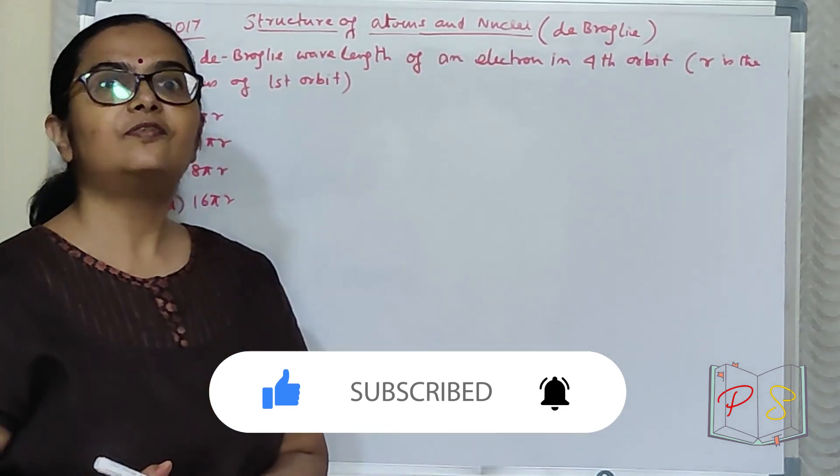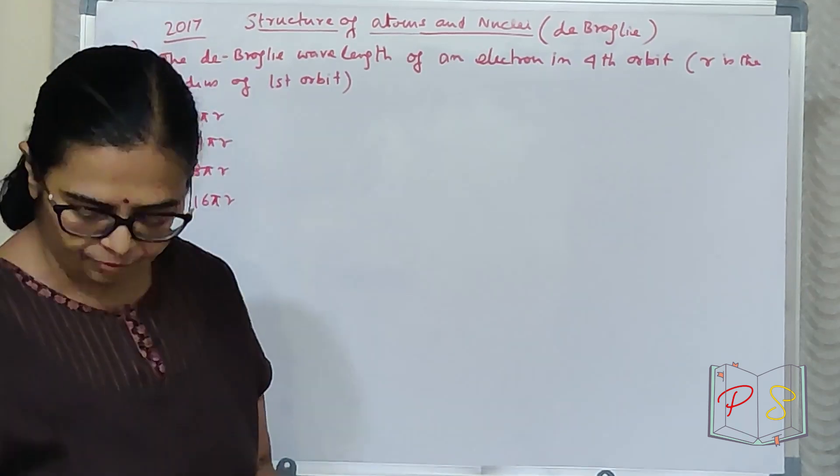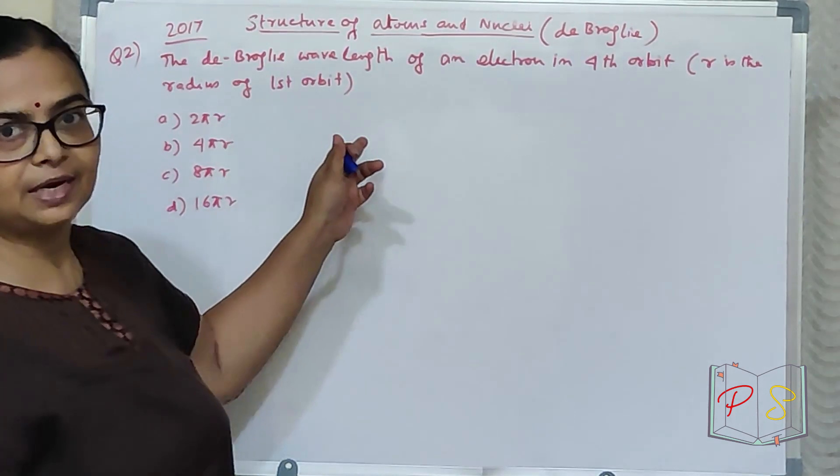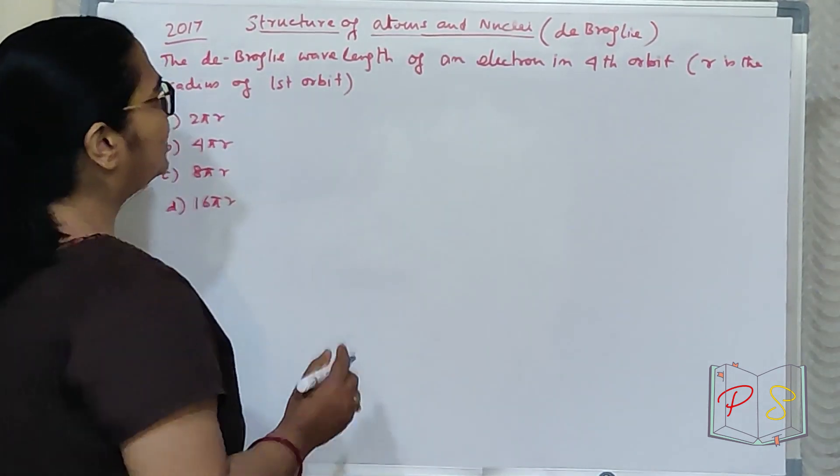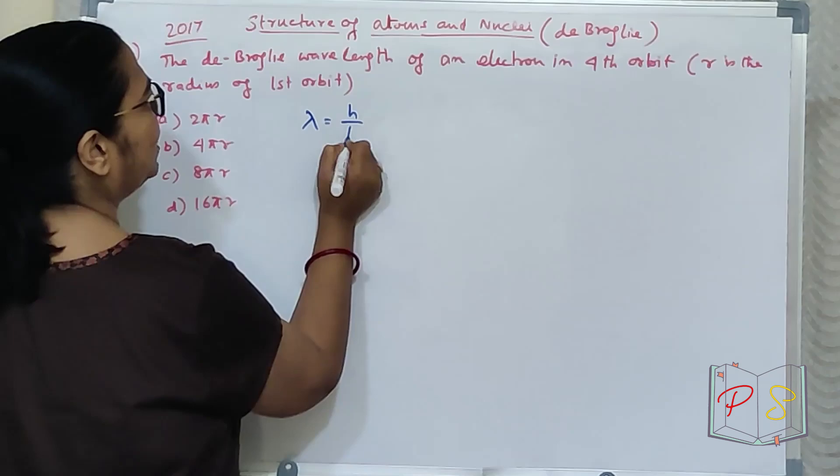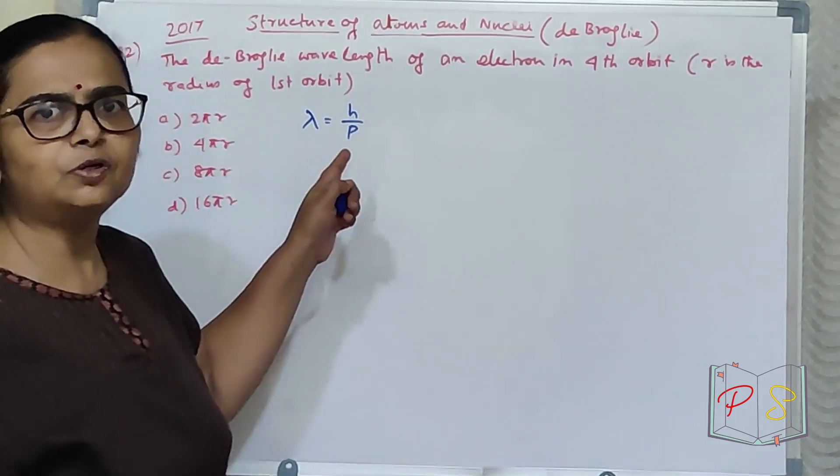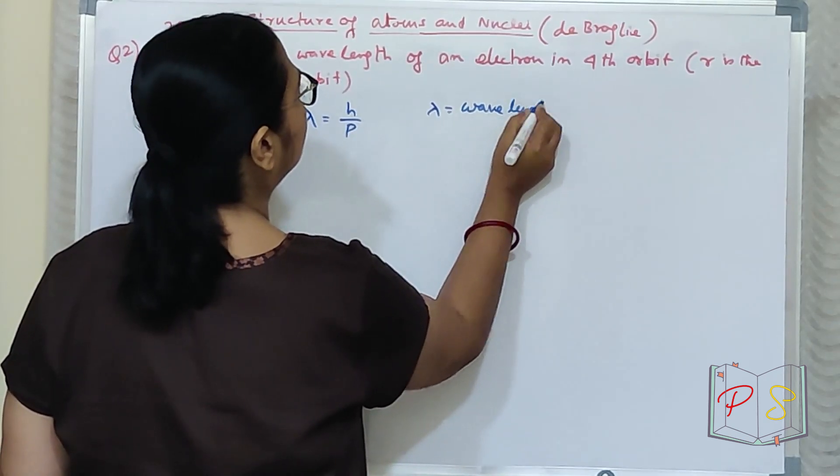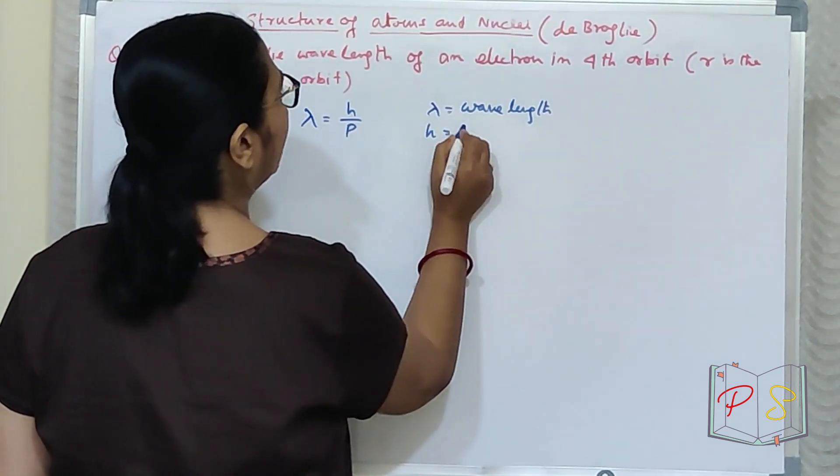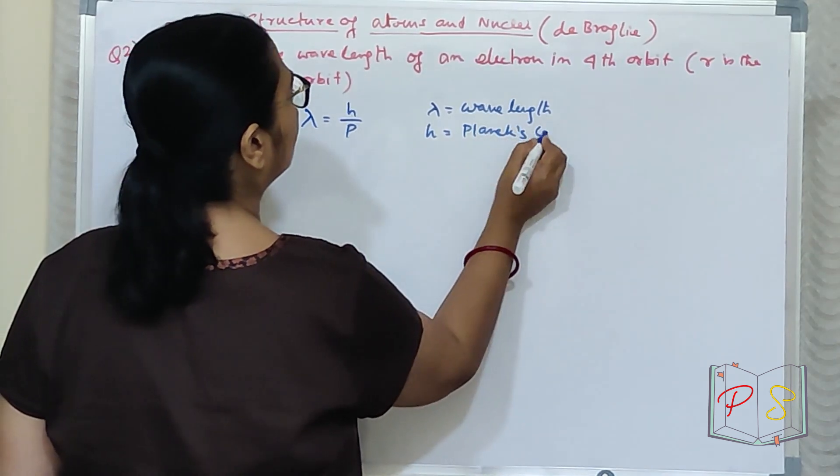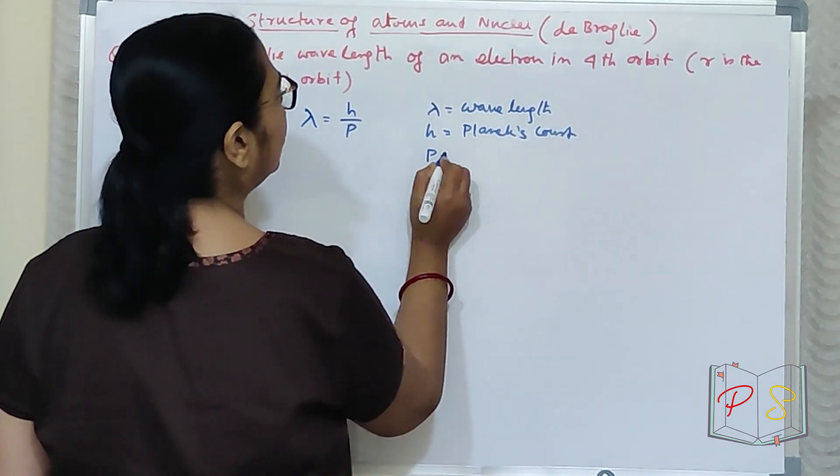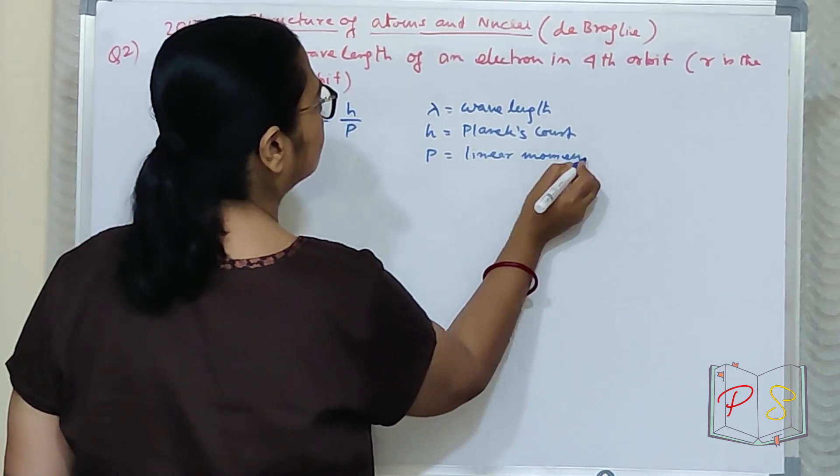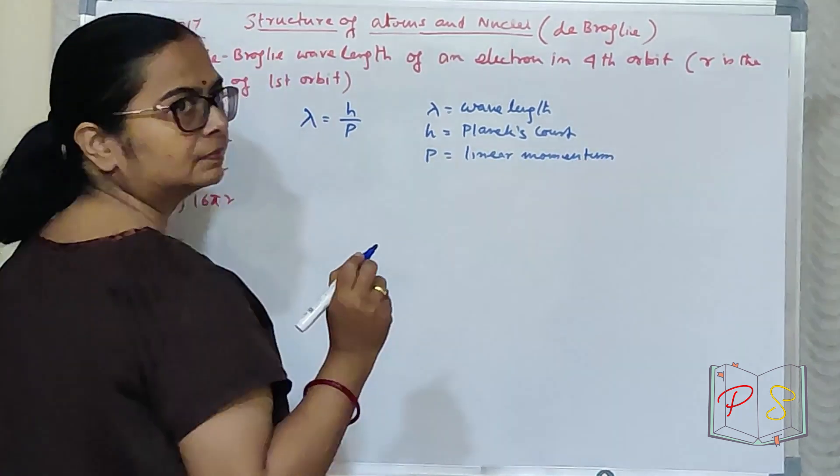We just calculated the wavelength for the first orbit. So we'll start with that. Wavelength, what is it? h by p. We know everything. Lambda is wavelength, h is Planck's constant, p is linear momentum.